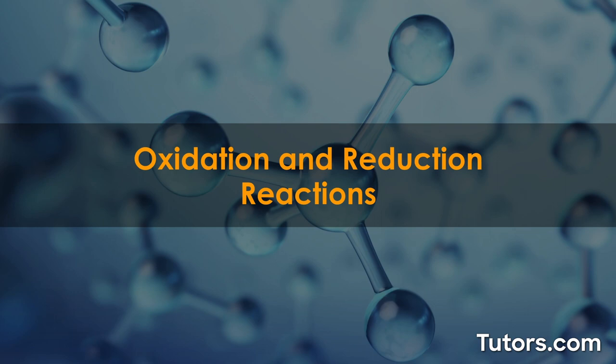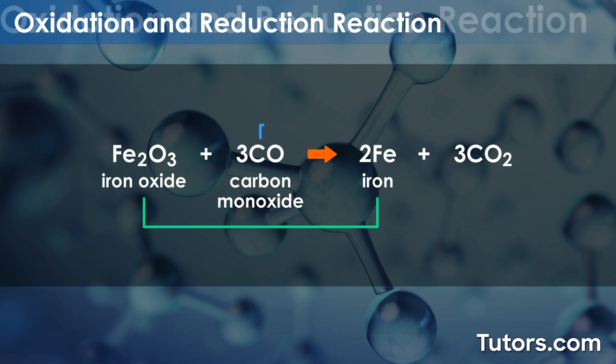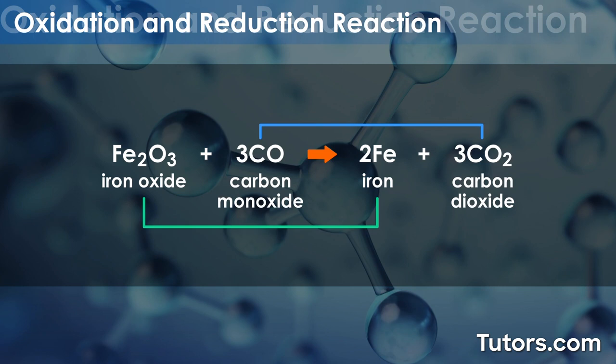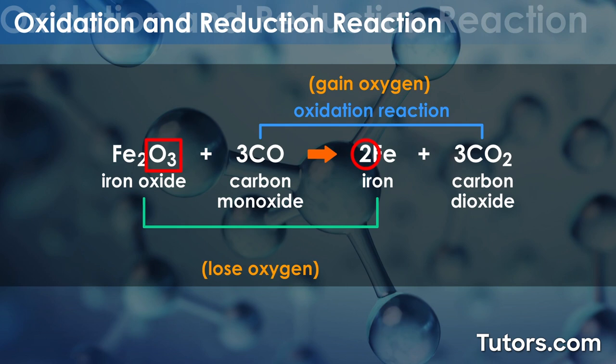Oxidation and reduction reactions. Removing iron from iron ore is a classic example of a redox reaction. At the same time, iron oxide converts to iron, and carbon monoxide converts to carbon dioxide. It can be easier to think of this in terms of two half reactions. Three carbon monoxide molecules gain oxygen to yield three carbon dioxide molecules — this is an oxidation reaction. One molecule of iron oxide loses oxygen to yield two atoms of iron — a reduction reaction.